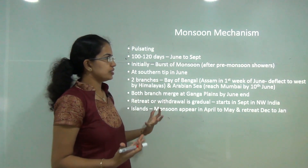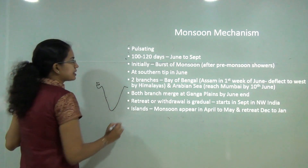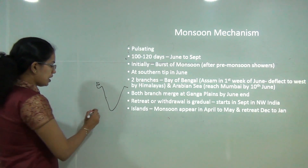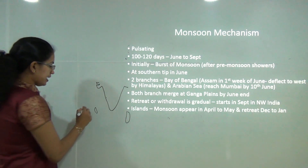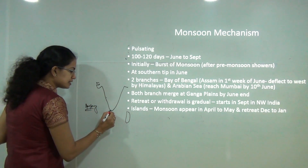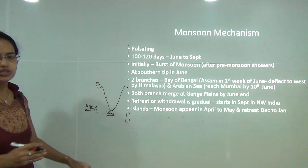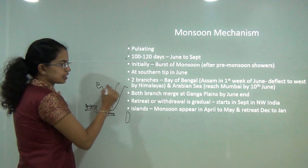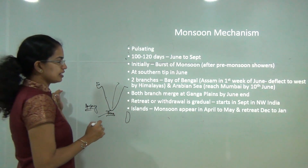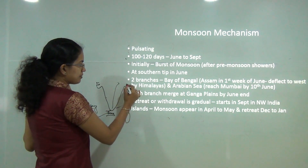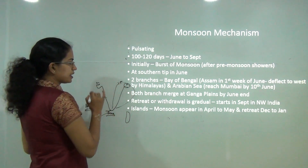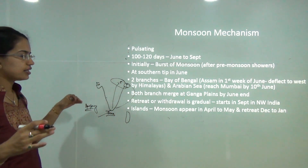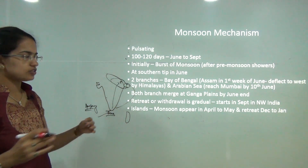The monsoon mechanism is a pulsating behavior occurring over 100 to 120 days from June to September. Monsoon first appears over island regions in April to May but touches the mainland by June 1st, reaching the southernmost tip of India. It then bifurcates into two branches — one moving towards the Ganga plains and another going towards the Bay of Bengal, bringing rainfall to the northeast. Both branches eventually join in the northern Ganga plains, causing ample rainfall there.